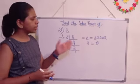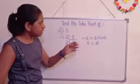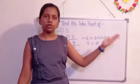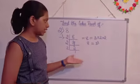8 is equal to 2 cubes. We are asking that how it got 2 cubes. 2 × 2 means 4, 4 × 2 is 8. So, 8 is the answer.